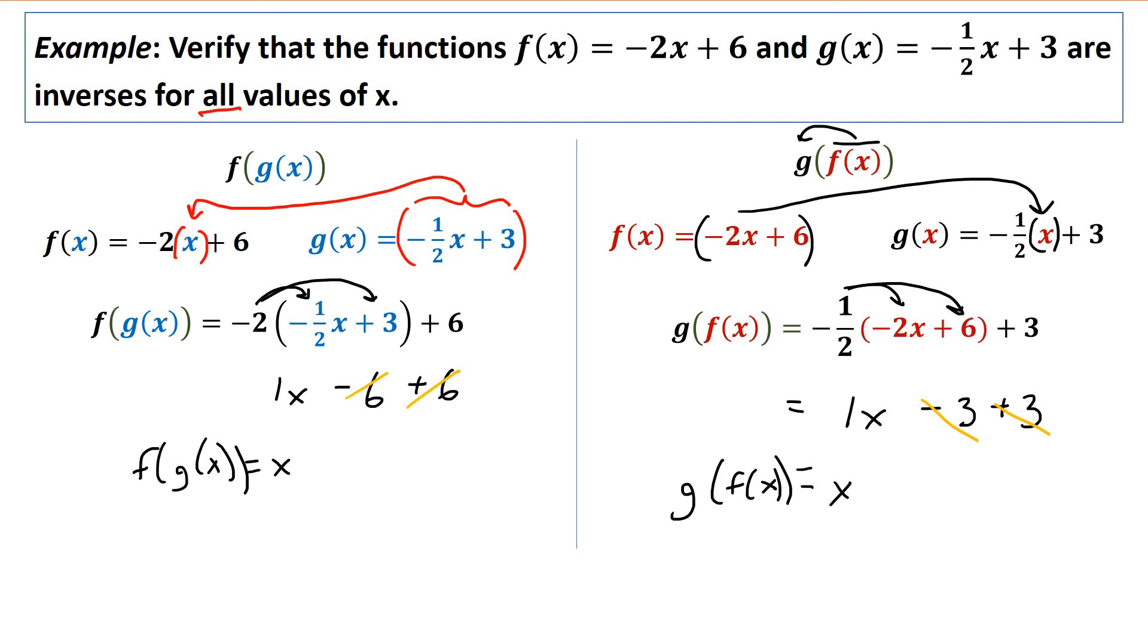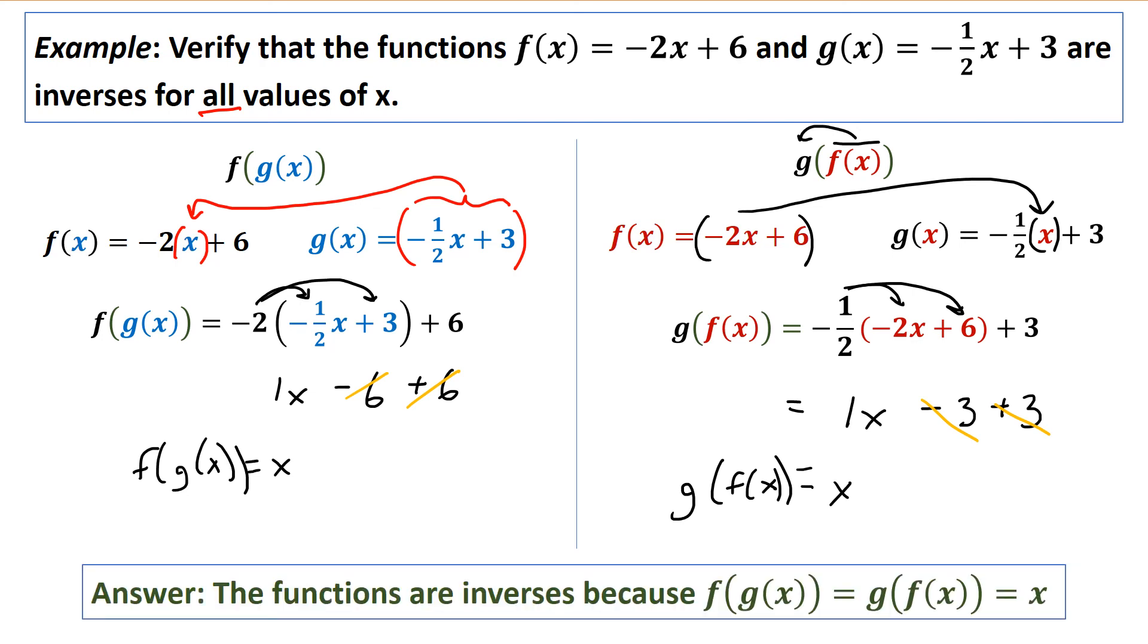So we confirmed it. That means no matter what point you substitute into either function and then substitute the result into the other function, you're always going to get back to the point that you started out with. That's what we did in the previous example as well with 5. So the functions are inverses because f of g of x and g of f of x equal x.